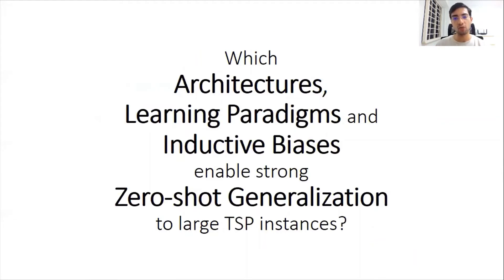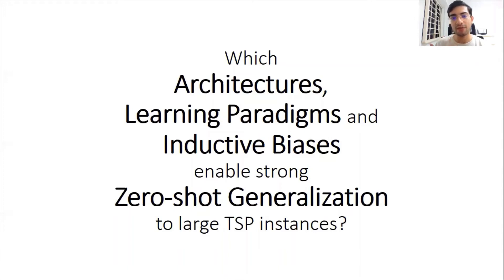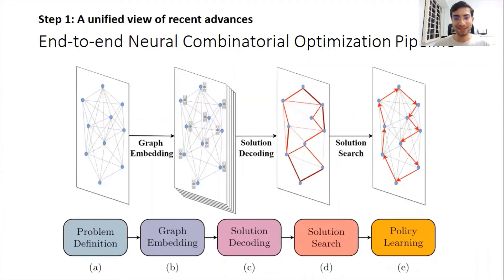We ask: which architectures, learning paradigms, and inductive biases are actually enabling strong zero-shot generalization to larger TSP instances? We know these new architectures perform really well on fixed sizes, but we haven't studied how they generalize. To investigate out-of-distribution generalization, the first step was to unify all these architectural ideas into one single five-stage pipeline, which we could then experimentally compare and tweak each component of to test which components lead to real strong generalization.